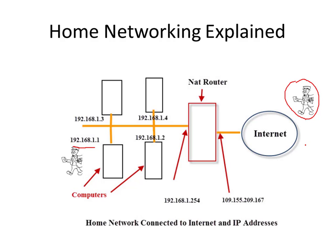Let's finish with a diagram. All devices on the home network have an IP address starting with 192.168.1. The home router — also known as the default gateway — has the IP address 192.168.1.254. Common choices for the gateway address are 192.168.1.254 or 192.168.1.1. The router also has an external IP address, which we'll cover in another video on internal and external IP addresses.